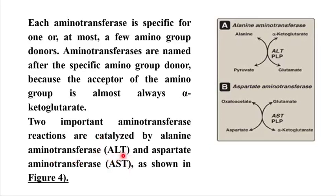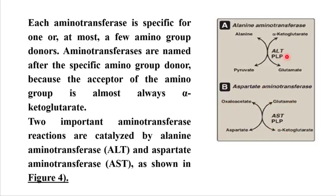Important examples of aminotransferases are ALT, alanine aminotransferase, and AST, aspartate aminotransferase. The amino group is transferred from the amino acid to alpha-ketoglutarate, converting it into glutamate, which is involved in several metabolic pathways. The aspartate produced via transamination of oxaloacetate is also an important intermediate in several metabolic pathways, and both glutamate and aspartate are key nitrogen carriers.